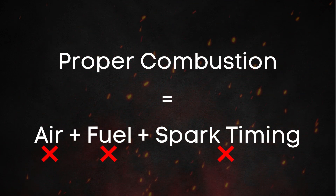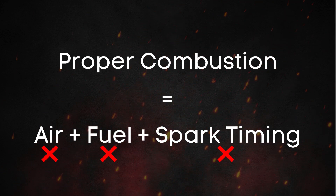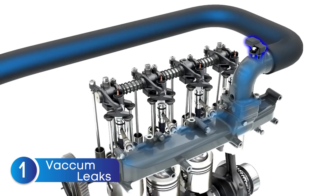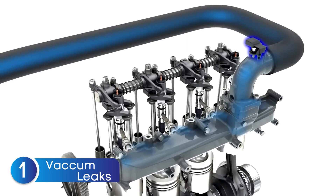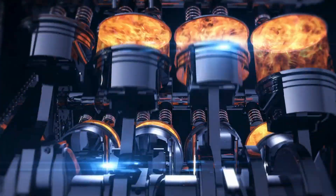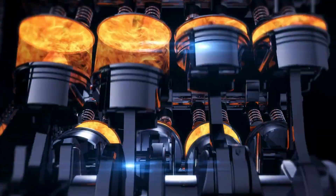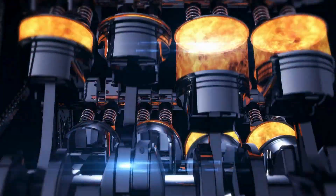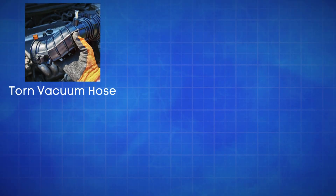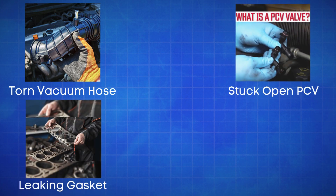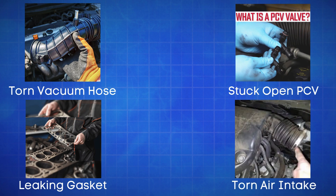Now let's dive into some factors that can affect the air, fuel, or spark. First up, vacuum leaks. A vacuum leak allows unmetered air to enter the engine. This extra air throws off the air-fuel ratio, causing the mixture to run too lean, which leads to misfires. Some common locations for vacuum leaks include a torn vacuum hose, a stuck-open PCV valve, a leaking intake manifold gasket, or anything torn in the air intake system after the MAP sensor.